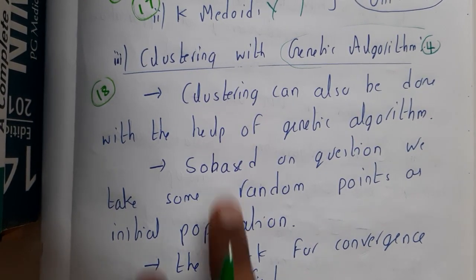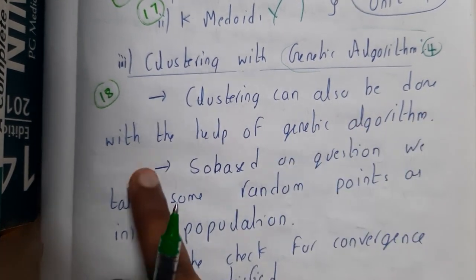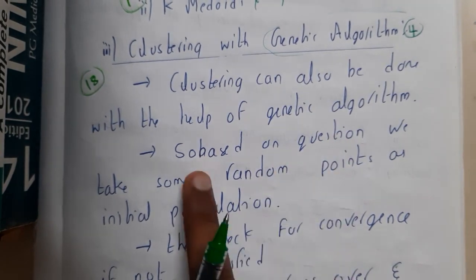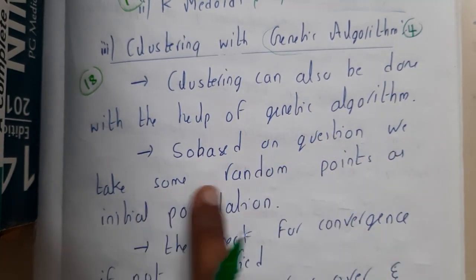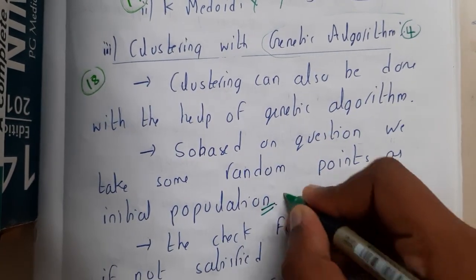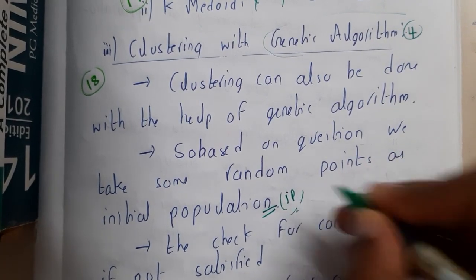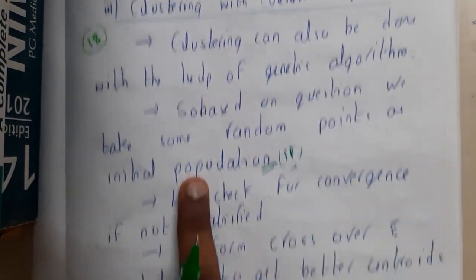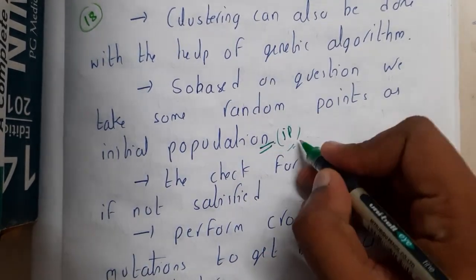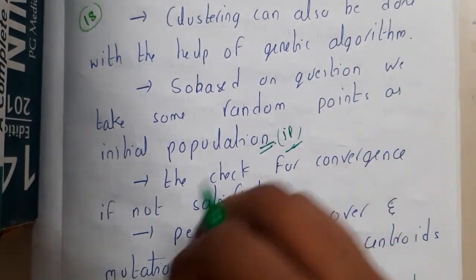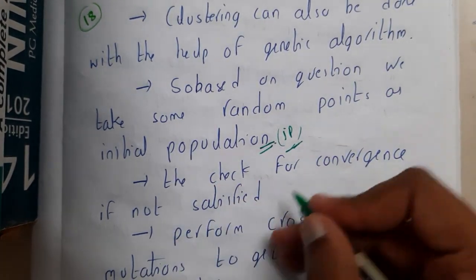Clustering can also be done with the help of genetic algorithm. Based on the question, we take some random population. Population is nothing but your input. Once we took that population, then we check for convergence.